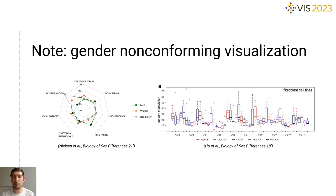Nevertheless, details about each non-conforming gender representation are present in the paper. For example, the visualization on the left represents male, female, and non-binary genders using three colors — green, orange, and grey. The visualization on the right represents typical biological females and males, described as 46XXF or 46XYM in red and blue colors, and three categories of intersex people in brown, purple, and dark blue colors.